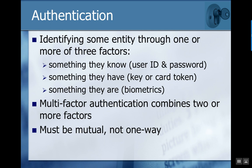Authentication is about identifying the identity of something through what we call different factors. There are three factors, and the best practice is to have at least two of these three in place. The first factor is something you know — for example, a username and password. Something you have would be a physical key, a card token, or something you plug into your PC. You also see applications use your phone number and send you a text message to meet this requirement.